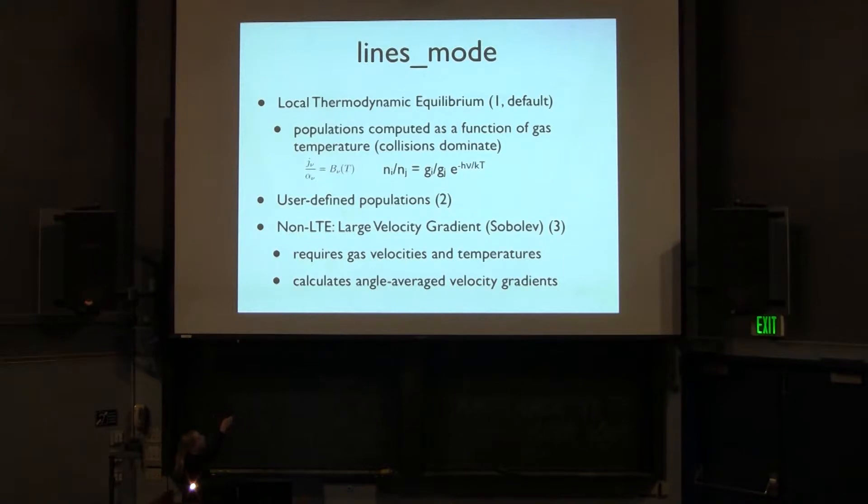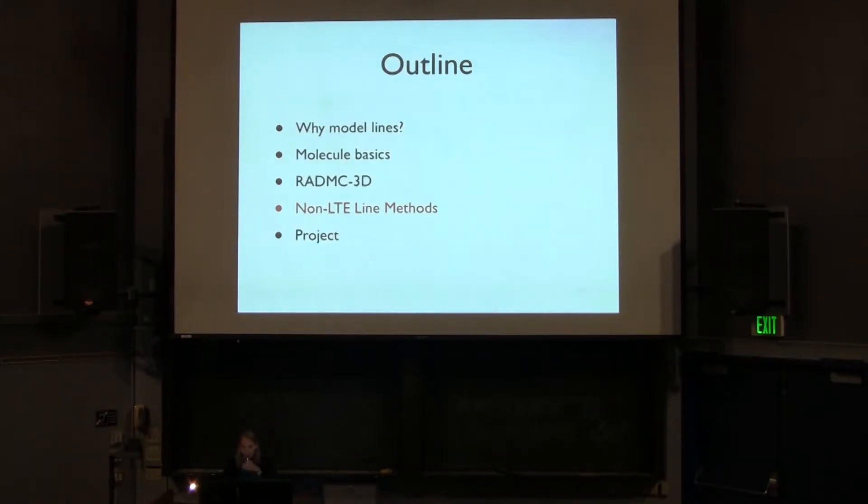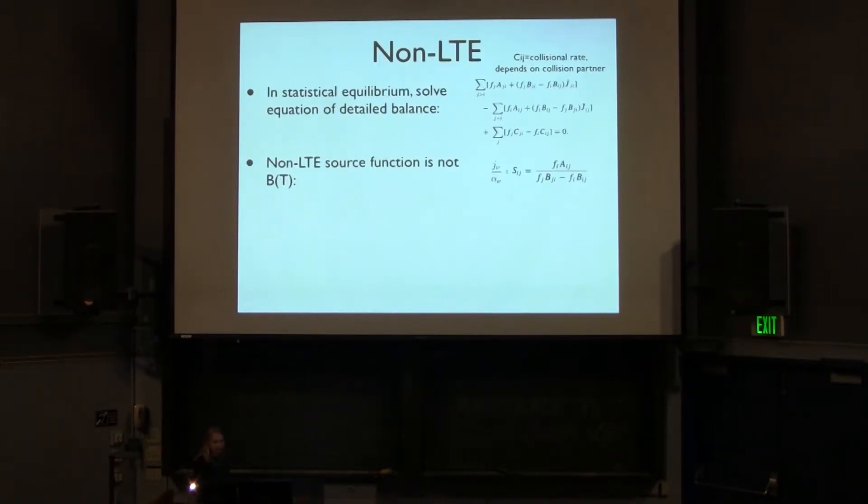So one of the last options is doing the non-LTE or large velocity gradient method, which is also called the Sobolev approximation. So in this method, it requires both the gas temperatures and the gas velocities everywhere in the grid. And then RADMC computes the angle average velocity gradients. So I'll just diverge to talk about non-LTE for a minute. In non-LTE, what you're going to solve is the equation of detailed balance, which is an equation that basically says that the rate of excitations is equal to the rate of de-excitations.